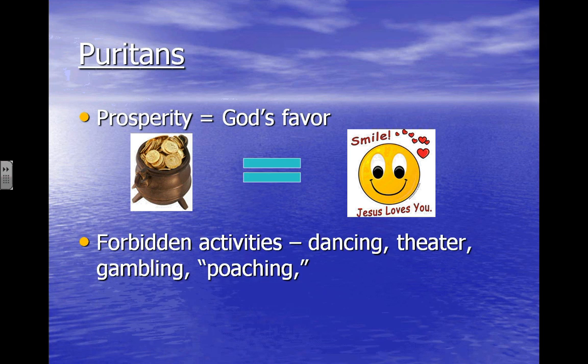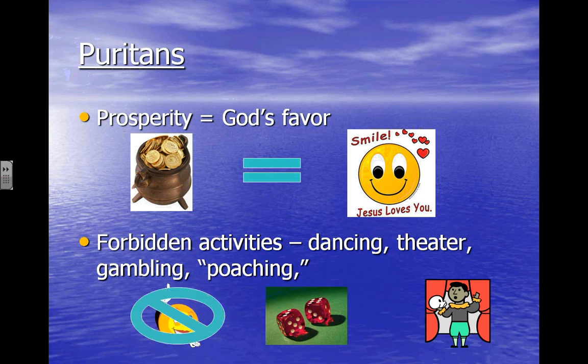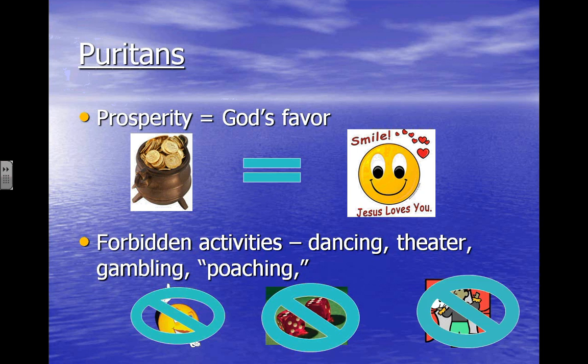Certainly there were some forbidden activities for Puritans. This is the time when Shakespeare's plays were being presented in England, and there was none of that going on in the Puritan lifestyle — no gambling, no theater, no dancing, no kinds of activities like that. They were considered to be sinful. In England there was a great activity in the spring called Dancing Around the Maypole, and that was a very forbidden activity for the English Puritans — you can imagine with the pole and the springtime and the whole sense of fertility why they didn't agree with that particular activity.